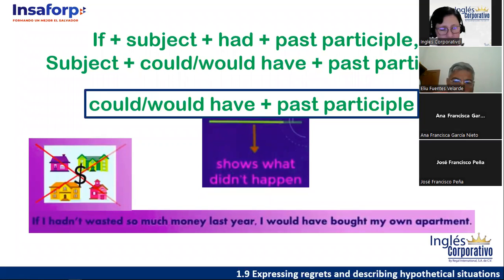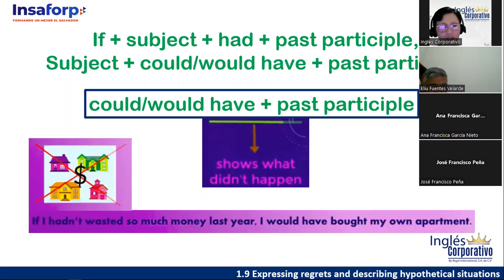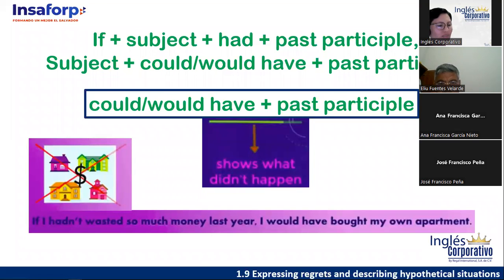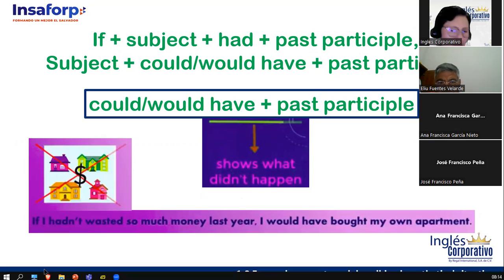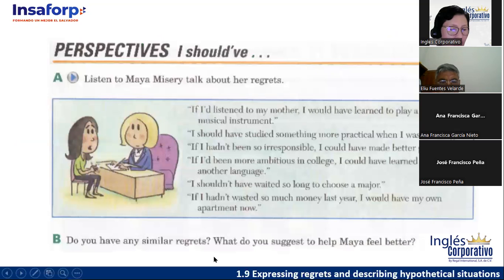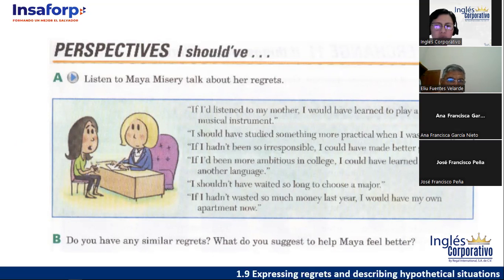For example: 'If I hadn't wasted so much money last year, I would have bought my own apartment.' This means it didn't happen — I wasted money, maybe gambling or investing wrong, so now I'm living at my parents' house and can't buy my own apartment. Remember: the second clause shows what didn't happen. Now there's a listening exercise — here we have six sentences. I need some volunteers to read them out loud so we can look at the structure.